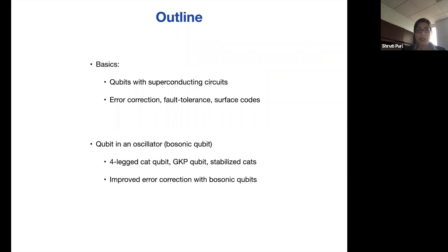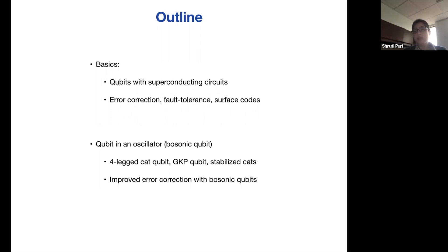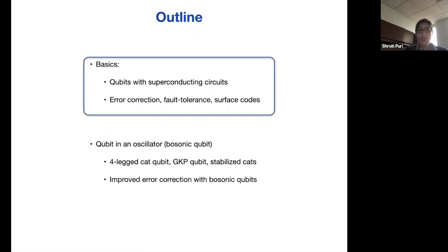I'm going to split the talk into two parts. I'll start with the basics because there's a wide range of audience. I'll tell you a little bit about superconducting circuits and how we build qubits. To understand most of my talk, you don't really need to know how these systems work, but I'll show you some experimental results achieved in superconducting circuits. Then I'll introduce error correction and fault tolerance, and tell you about the most famous error correcting code — the topological surface code. In the second part, I'll tell you about building qubits and error correction at Yale, in the area of bosonic error correction.